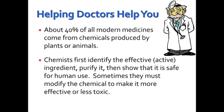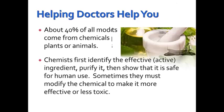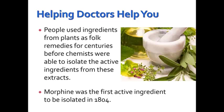That's a few of the ways chemists can help in terms of energy usage, storage, and production. Now we're going to look at how chemists help doctors. About 40% of all modern medicines come from chemicals produced by plants or animals. Chemists first identify the active ingredient, purify it, then show that it is safe for human use. Sometimes they must modify the chemical to make it more effective or less toxic. People used ingredients from plants as folk remedies for centuries before chemists were able to isolate the actual active ingredients from these extracts.